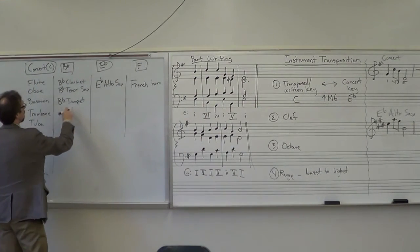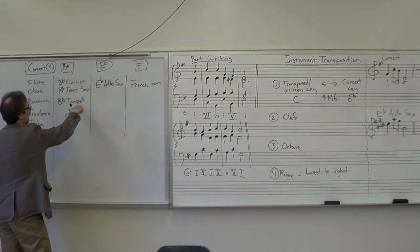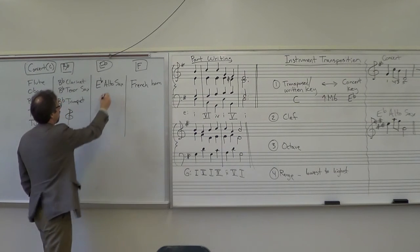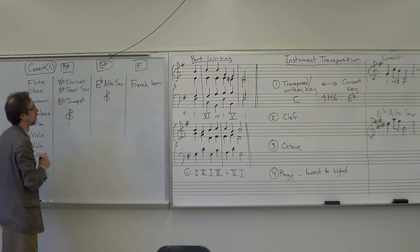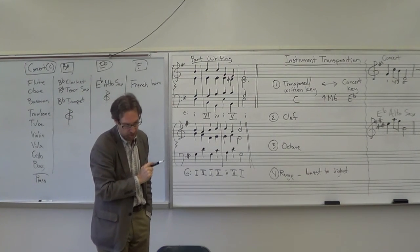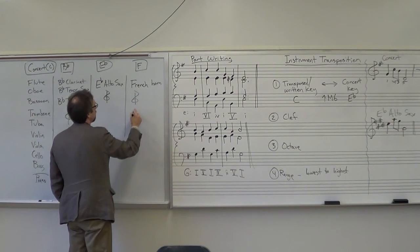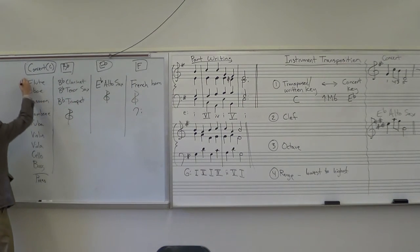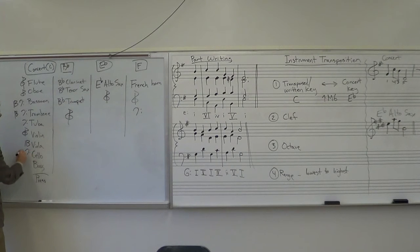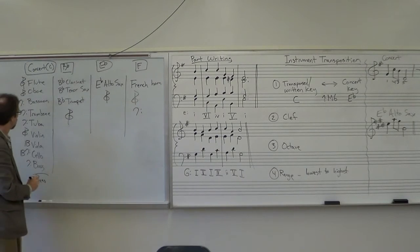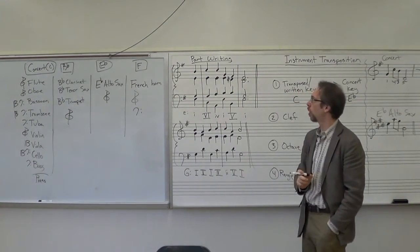Let's look at clef. All of these instruments use the treble clef that I listed here. Clarinet, tenor sax, trumpet. Alto sax uses the treble clef. The French horn often uses treble clef, but sometimes uses bass clef. Flute, treble clef. Oboe, treble clef. Bassoon, often bass clef. Sometimes the tenor clef. Trombone, bass clef. Sometimes the tenor clef. Tuba, bass clef. Violin, treble. Viola, alto clef. Cello, bass clef. Sometimes tenor clef. The bass, bass clef. That's a quick cheat sheet on what clefs are used for each instrument.